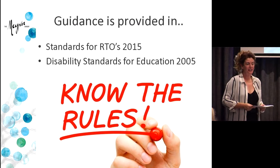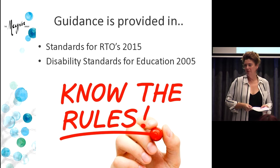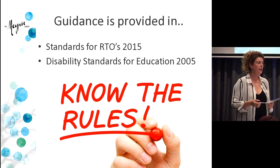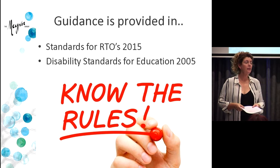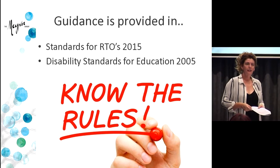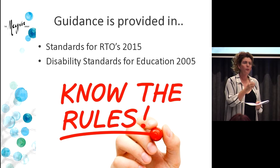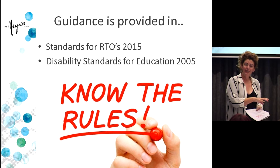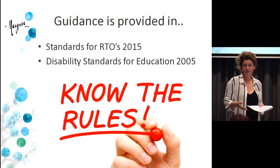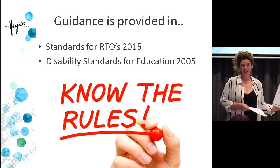When you look at the Standards for RTOs, they remain almost — in fact, are silent — on reasonable adjustment. They simply talk about putting an assessment process in place that meets the requirements of the training package and the principles of assessment and rules of evidence. Another standard says that when putting a strategy in place, you make sure it meets the needs of the individual learner — but what process you might go through to actually achieve those outcomes is never mentioned. So it becomes up to you to understand this legislation and your students well enough to do those things. Please download these standards and read them.